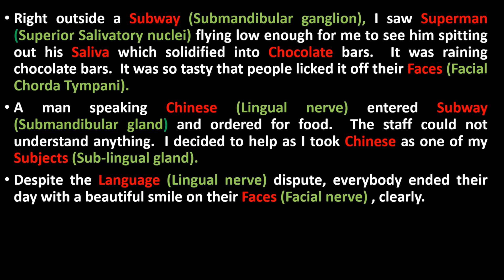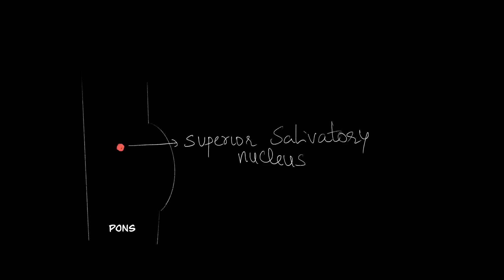This sequence used in the story is the actual course of the parasympathetic route of the submandibular ganglion. We will see more about this later. The last part of the story is the clue for the topographical and functional relationship of the ganglion: language for the lingual nerve, which is the topographical relation, and face for the facial nerve, which is the functional relation of the ganglion.